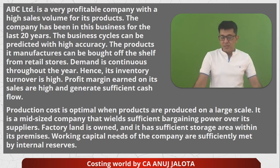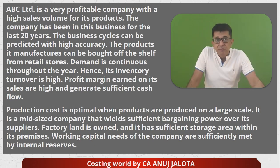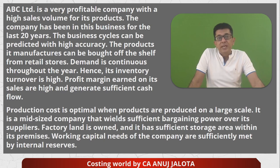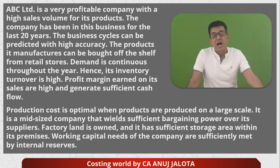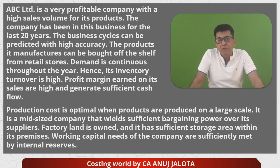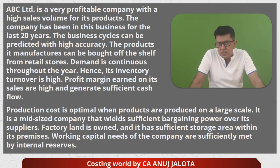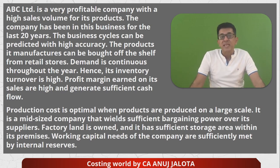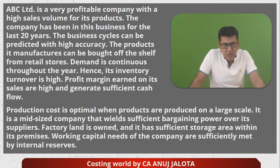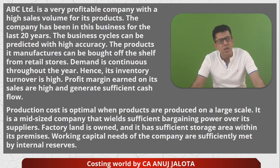This case study is all about the push system, pull system, and their combination. Let's start with the case study. ABC Limited is a very profitable company with high sales volume for its products. The company has been in business for the last 20 years. The business cycles can be predicted with high accuracy. The products that it manufactures can be bought off the shelf from retail stores.